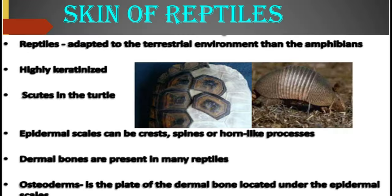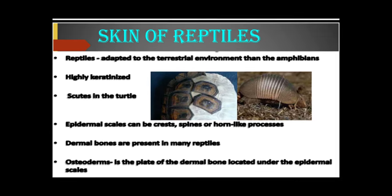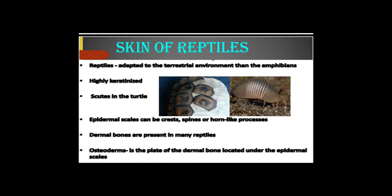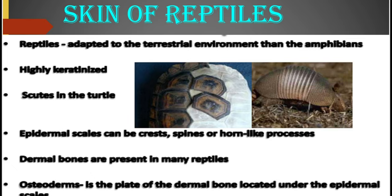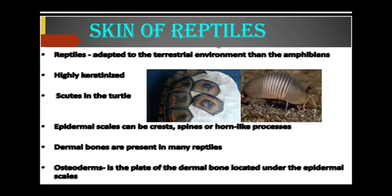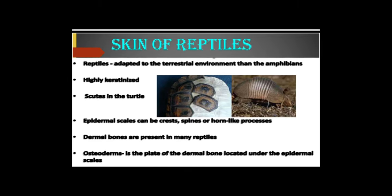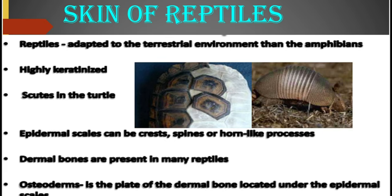Taking a look at the skin of reptiles, we must not forget that reptiles are adapted to the terrestrial environment compared to the amphibians. The skin of reptiles is thus highly keratinized. You have scutes as can be seen in the turtles. You also have epidermal scales which can be in the form of crests, spines, or horn-like surface processes. Dermal bones are also present in many reptiles. Osteoderms are also there — the osteoderm is a plate of dermal bone located under the epidermal scale.